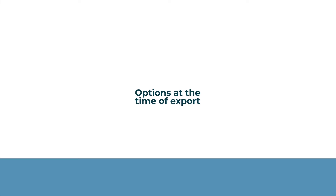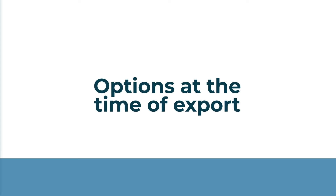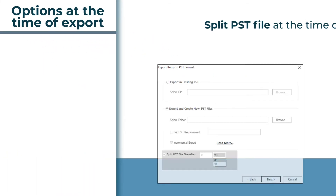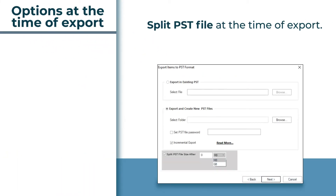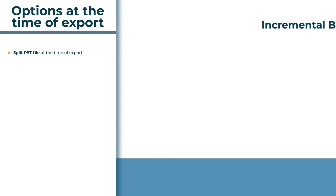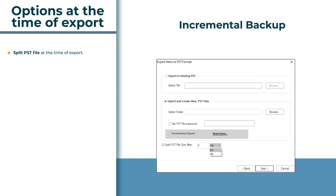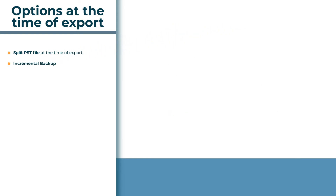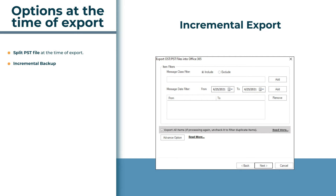The software provides several options at the time of export. You can split the result into PST files by providing a desired file size limit. It also provides an option to prevent duplicate items — while exporting to PST, use incremental backup to prevent duplicacy; while exporting to Office 365 or Live Exchange server, use incremental export or the export-all-items option to prevent duplicate items.